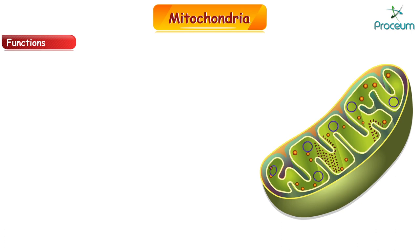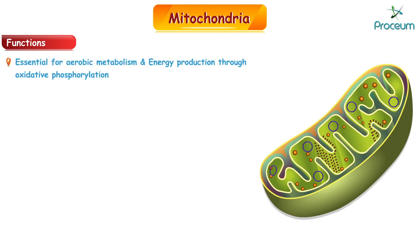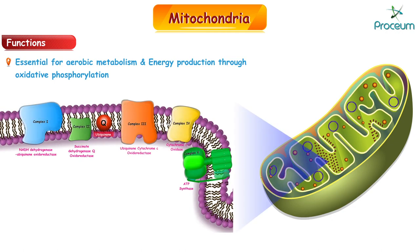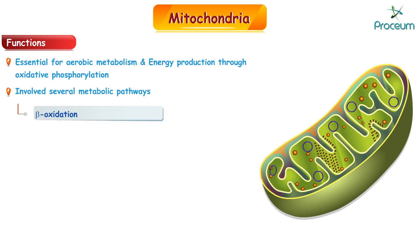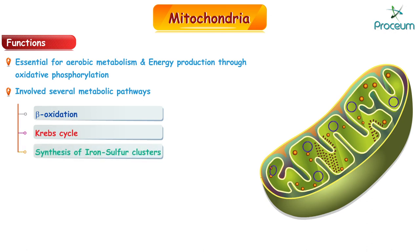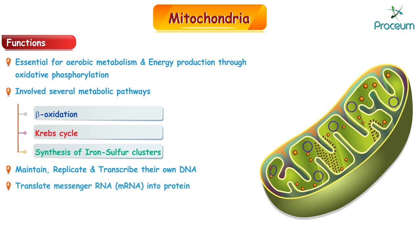Mitochondria are intracellular organelles essential for aerobic metabolism and energy production through oxidative phosphorylation, which is accomplished by the respiratory chain. Mitochondria are involved in several other metabolic pathways including beta oxidation, the Krebs cycle, and synthesis of iron-sulfur clusters. In addition, mitochondria maintain, replicate, and transcribe their own DNA and translate messenger RNA or mRNA into protein.